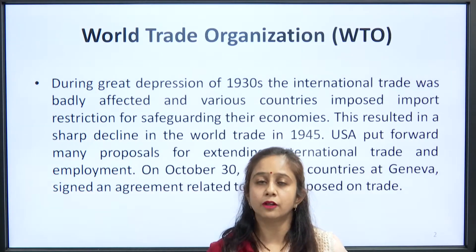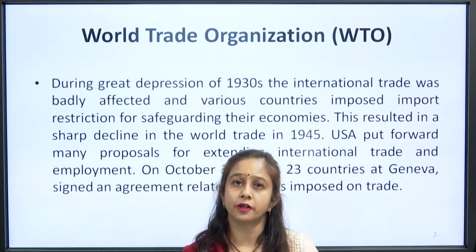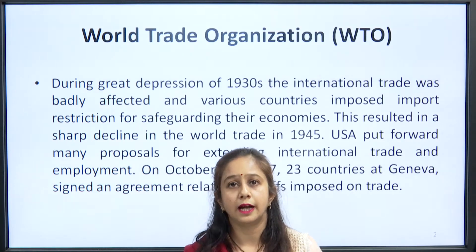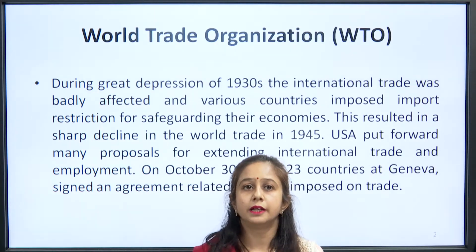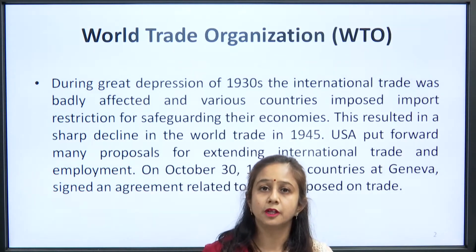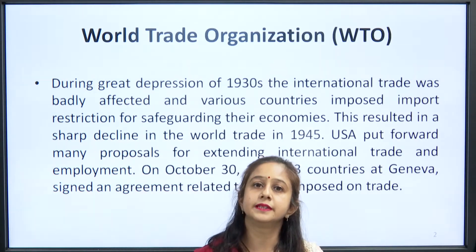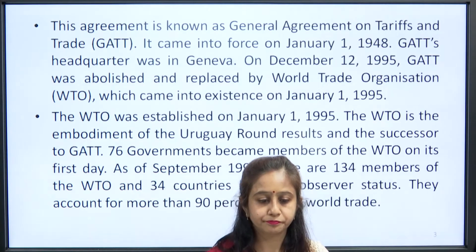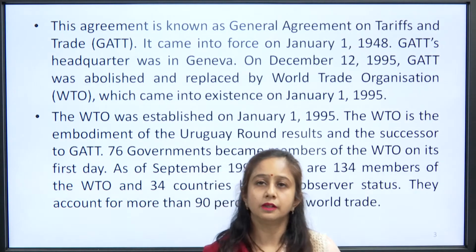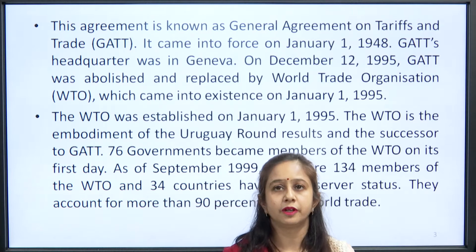For the ongoing process of growth, we need to export and import. With the decline in 1945, it was important to look into the matter and increase exports and imports because it directly impacts the economy and ultimately the employment of any country. For that purpose, the US intervened at Geneva and 23 countries signed an agreement related to the taxes imposed on trade. This agreement was known as the General Agreement on Tariff and Trade, that is GATT. It came into force on January 1, 1948.